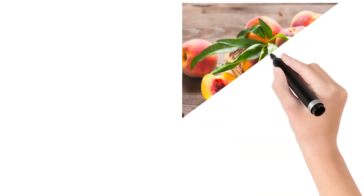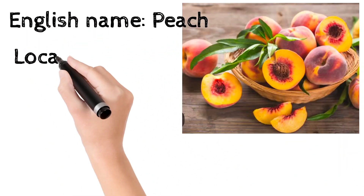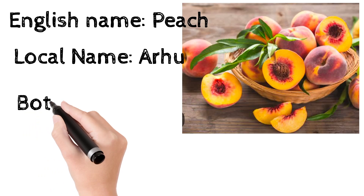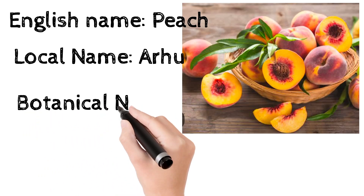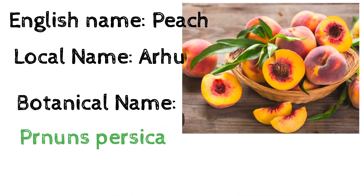The botanical name of peach is Prunus persica. Consumption of fruits like peaches, which are rich in vitamin A, are known to offer protection from lung and oral cancers. They contain many vital minerals such as potassium, fluoride, and iron.